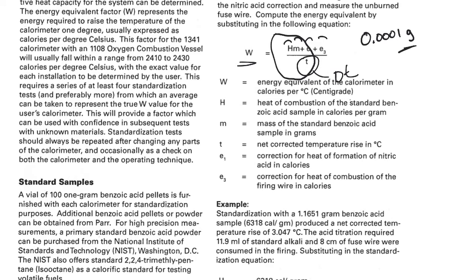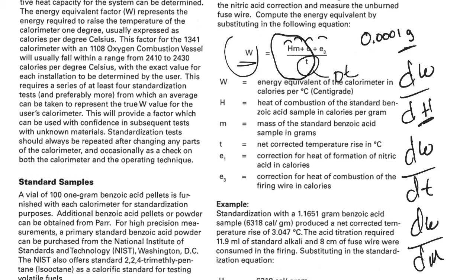So what we will do is take the partial derivative of W with respect to H, the partial derivative of W with respect to T, partial derivative of W with respect to mass. And then we'll take each of those terms, square them, and multiply by the uncertainty in that variable squared. And then add all of those up, ultimately take the square root, that'll help us get the uncertainty in W.